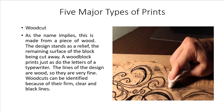Next is woodcut, a type of print. As the name implies, it is made from a piece of wood where the design stands in relief with the remaining surface of the block cut away — similar to how the letters of a typewriter function. The lines of the design are wood, so they are very fine. Woodcuts can be identified because of their firm, clear, and black lines.